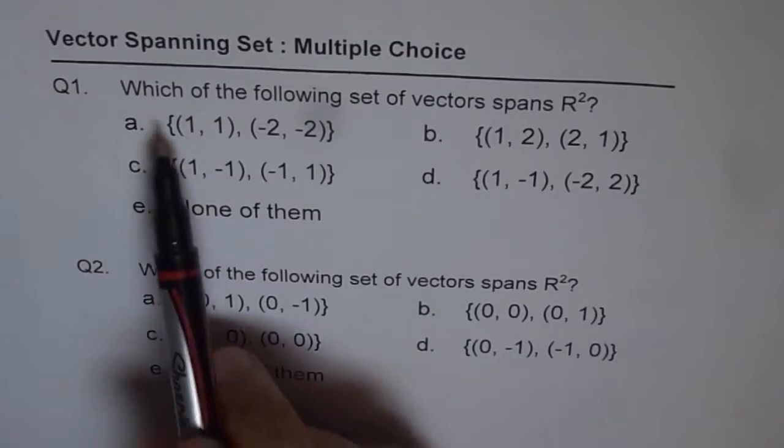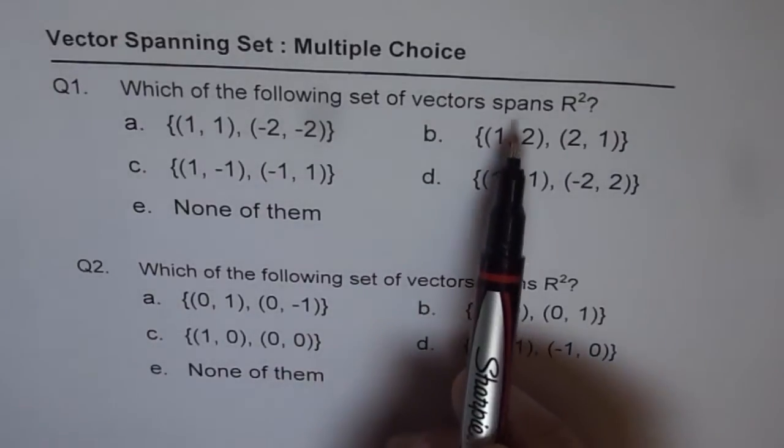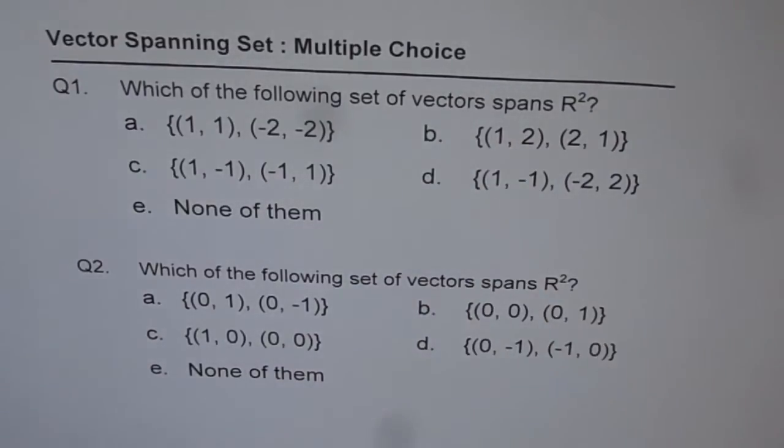Question number one is which of the following set of vectors spans R2? So we are given five choices. So let's go through them one by one. Now before we get into this let's try to understand what we are looking for.